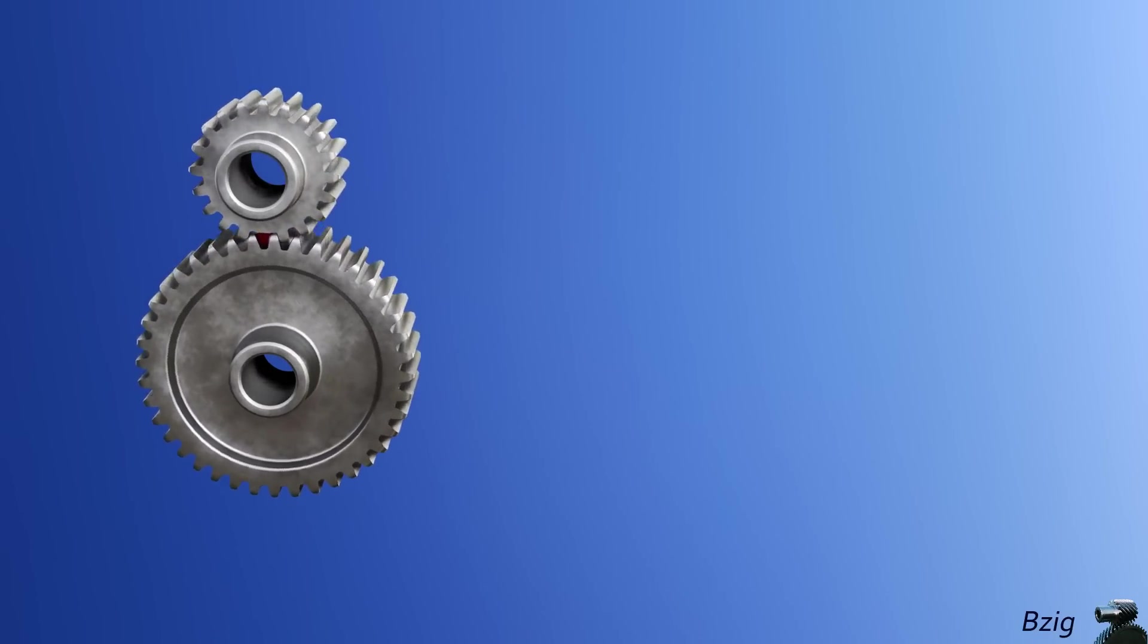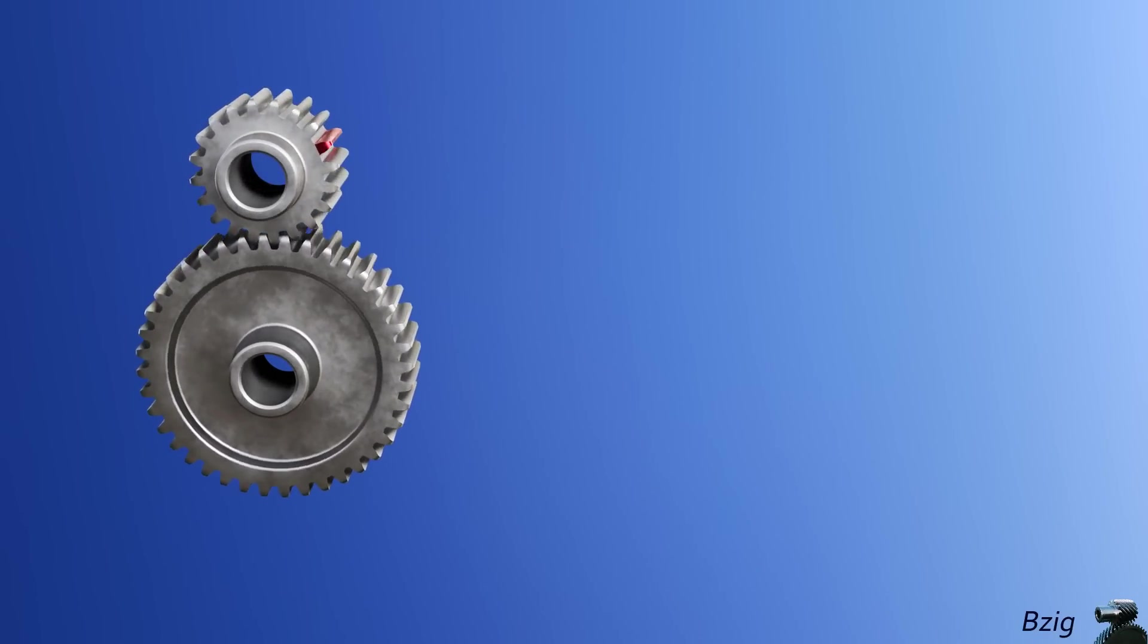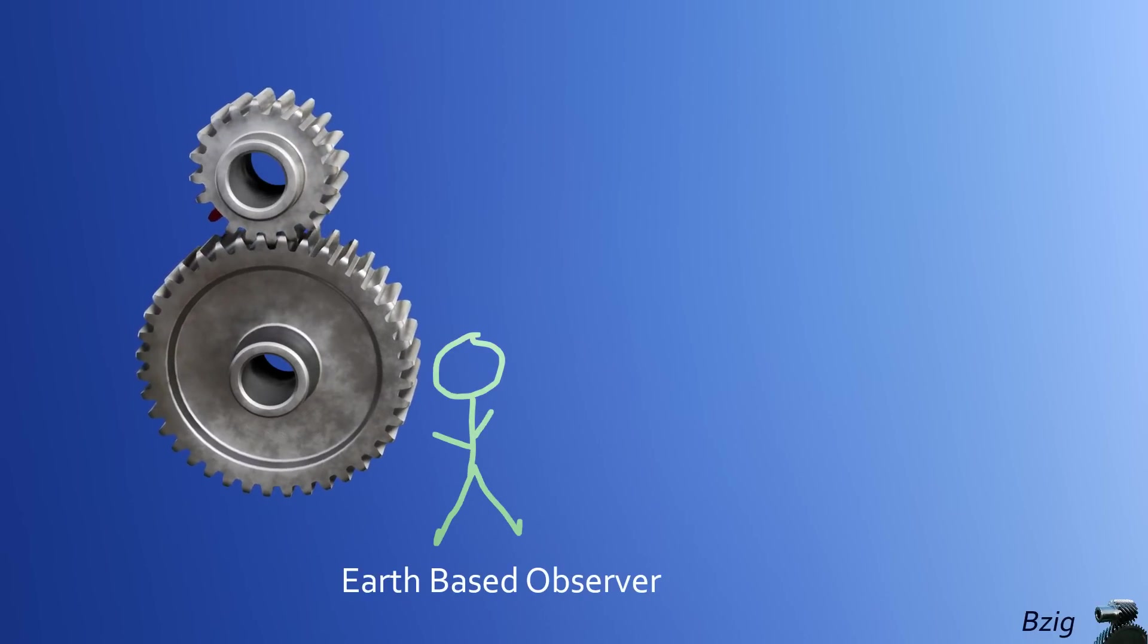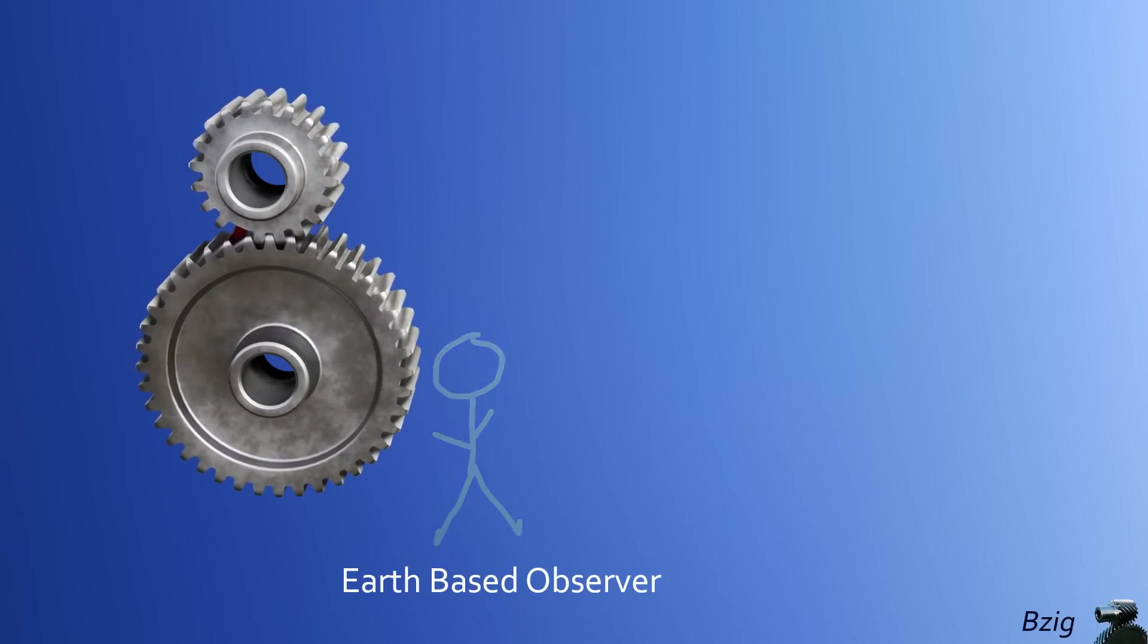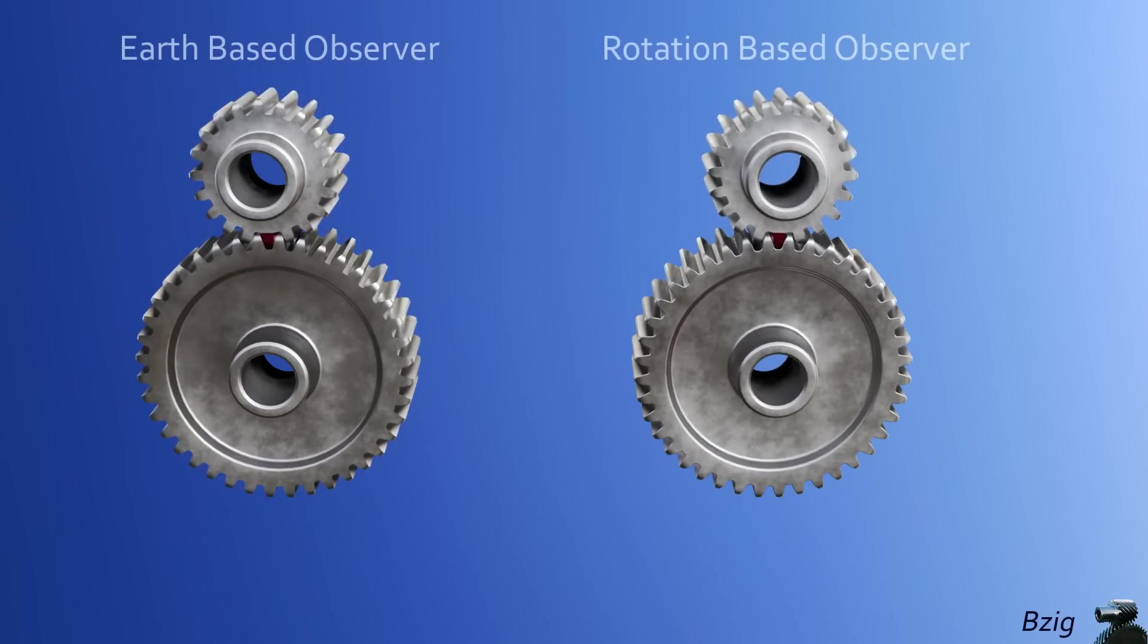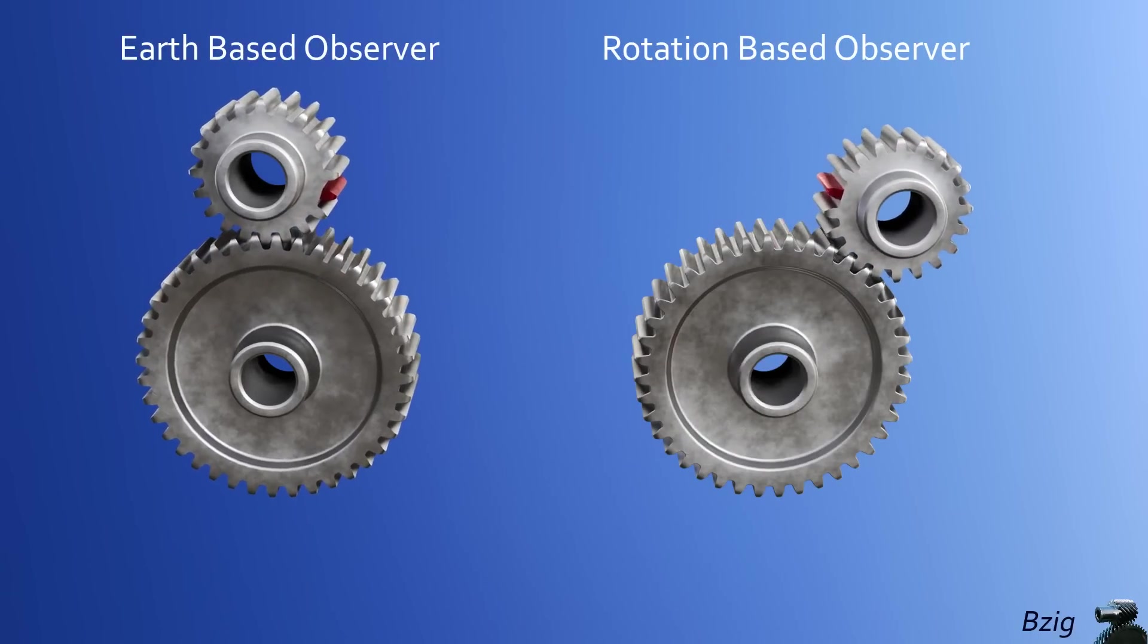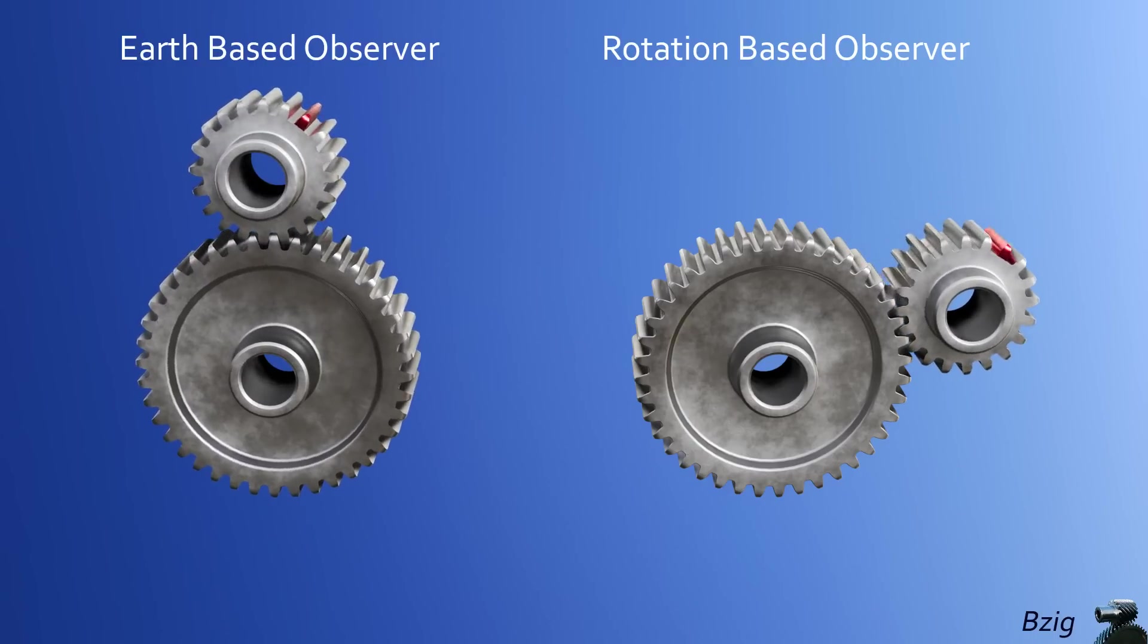In the animation on the left side of the screen, the observer is in the Earth-based frame of reference. The stickman is viewing these gears from a stationary position, so he sees both gears turning. But if we move out of the Earth-based frame of reference and shift to an observer position that's in the rotating frame of reference, we start to see the problem differently.